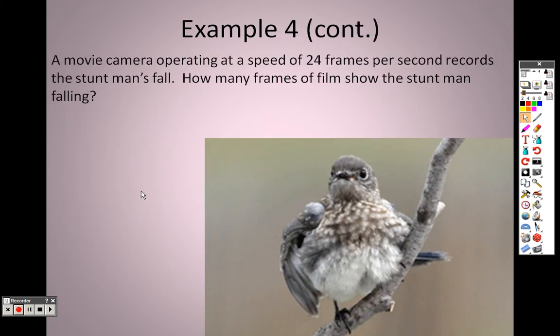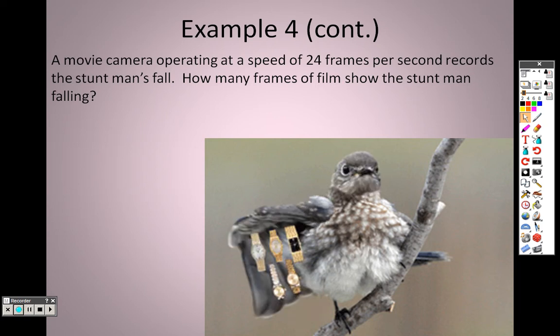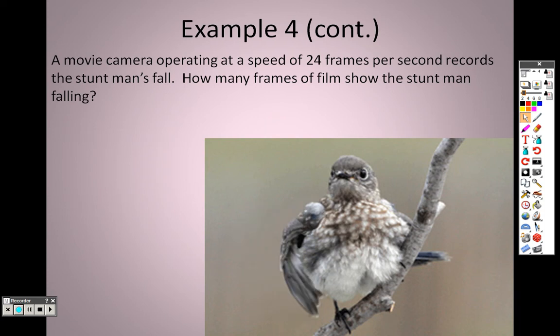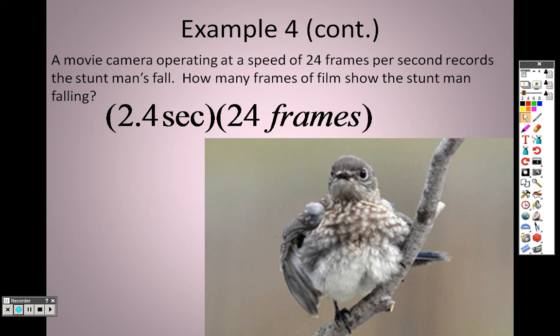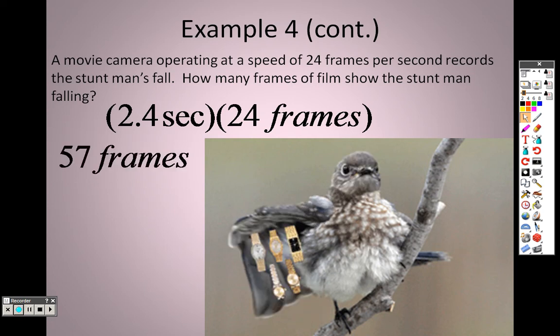So a movie camera operating at a speed of 24 frames per second records a stuntman falling. How many frames of film show the stuntman falling? Well, 24 frames per second, and he falls at 2.4 seconds, so 24 times 2.4, 57 frames. So 57 frames of film will be needed.